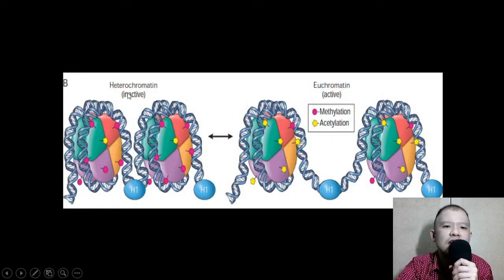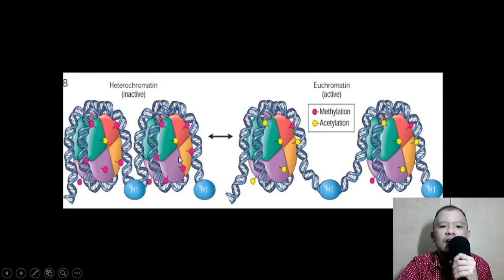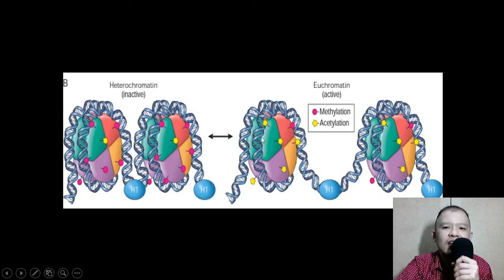This figure illustrates the two types of chromatin: heterochromatin, which is in the inactive form, and euchromatin, which is in the active form. The heterochromatin cannot be translated because it is in the clumped form — and what maintains it in that clumped form is lots of methyl groups on the histone. In the euchromatin, you see lots of acetyl groups, the yellow ones, which promote relaxation of the DNA.